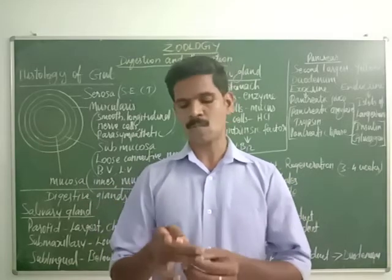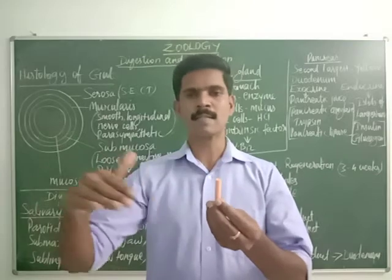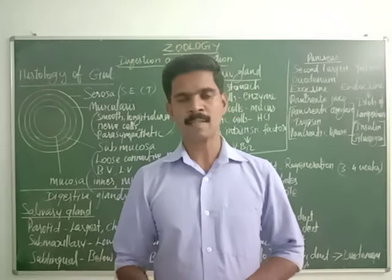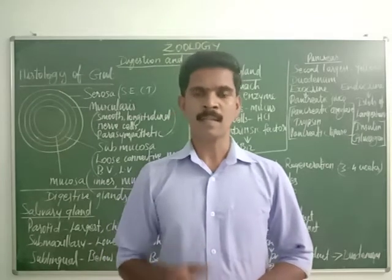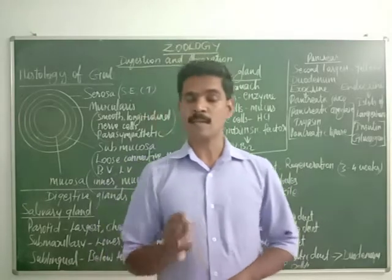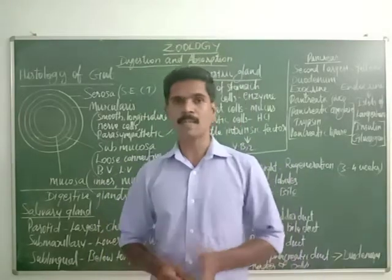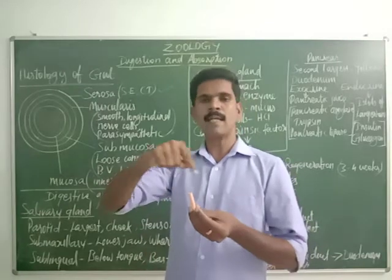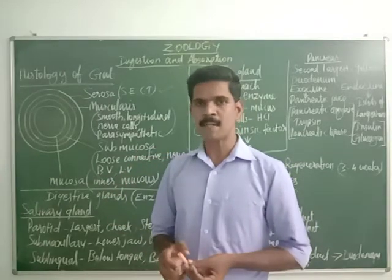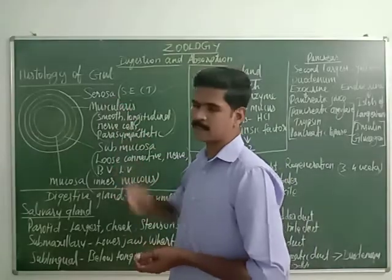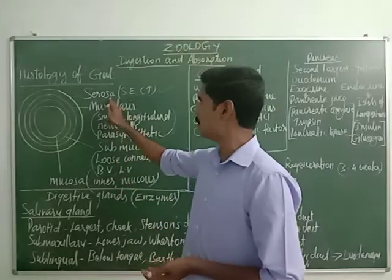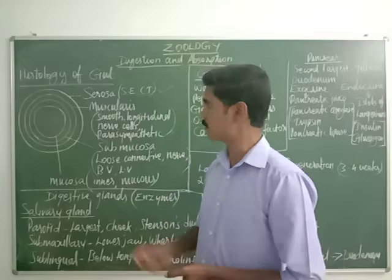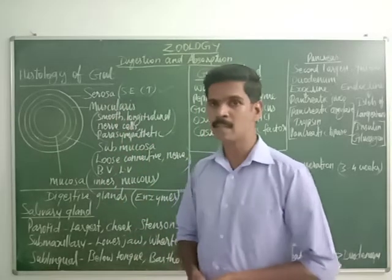Consider the cross-section of these organs — for example, the esophagus. When we take a cross section we can see four important layers. Similarly in the stomach, small intestine, and large intestine. The first and outermost layer is called the serosa layer, and this serosa layer is made up of squamous epithelium and a large amount of connective tissues.